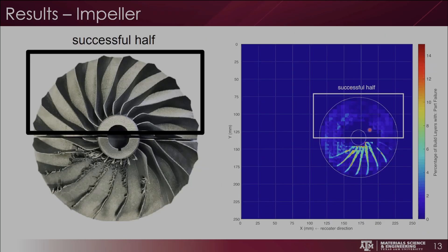Lastly, an impeller was built where half the impeller was swept away and did not build correctly, while the other half was relatively successful. On the right is a heat map showing the percentage of build layers with part failure. The bottom of the impeller shows a high percentage of build layers with part failure — up to around 14% — which corresponds to the fins that failed on the finished part.